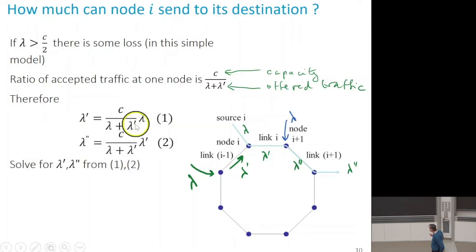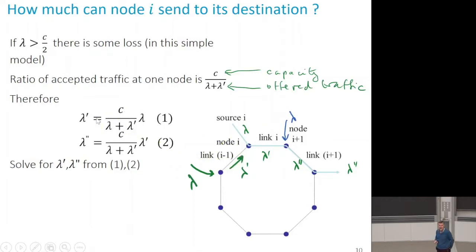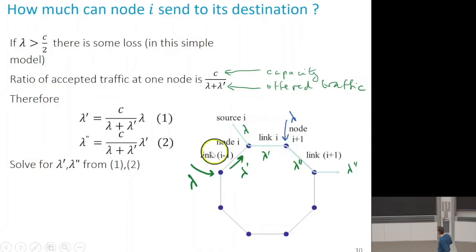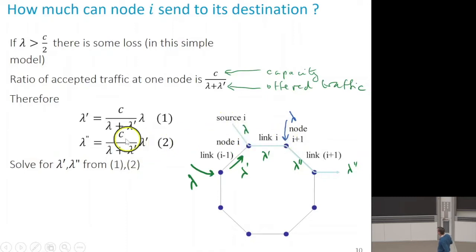This lambda prime is in fact the lambda prime of the previous flow — lambda prime i minus 1 — assuming complete symmetry. All nodes and all sources are exactly the same. Equation 2 is at the second hop. The offered traffic is also lambda — it's lambda of i plus 1 and lambda prime of i. And so we have this ratio and lambda second gives this result.